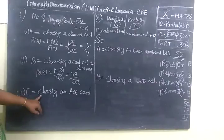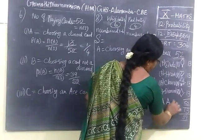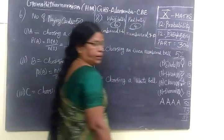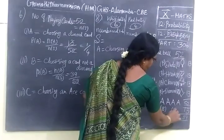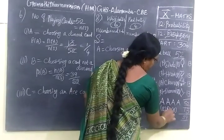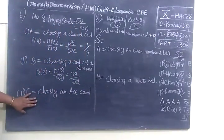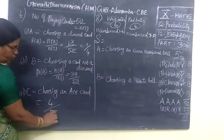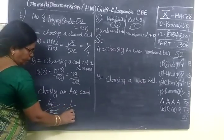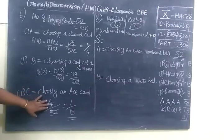And again we are choosing an Ace card. Ace cards — using the letters A, A, A, A — we have 4 Aces. In which 2 Aces are black cards and 2 are red cards. So totally we are selecting 4 Aces by 52. So if you cancel you get 1 by 13. So there are 4 Ace cards, so 4 by total 52.